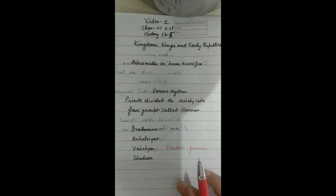Shudra was the last one. They were to serve these three groups and could not perform any rituals. Often women were also grouped with the Shudras. Women were considered in the category of Shudras. They were also not allowed to perform sacrifices and to study Vedas.